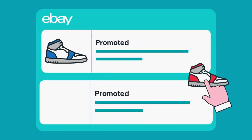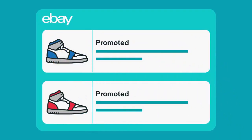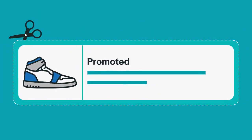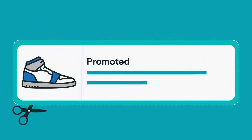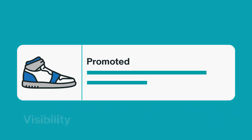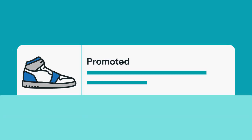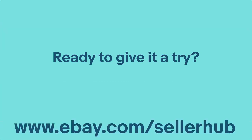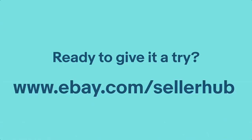As you build your Promoted Listings Advanced Campaign, be sure to select keywords that are relevant, and remember that choosing the right match type is a key component to tailoring your ad for visibility, relevance, and conversion. Ready to give it a try? Head to your seller hub to get started.